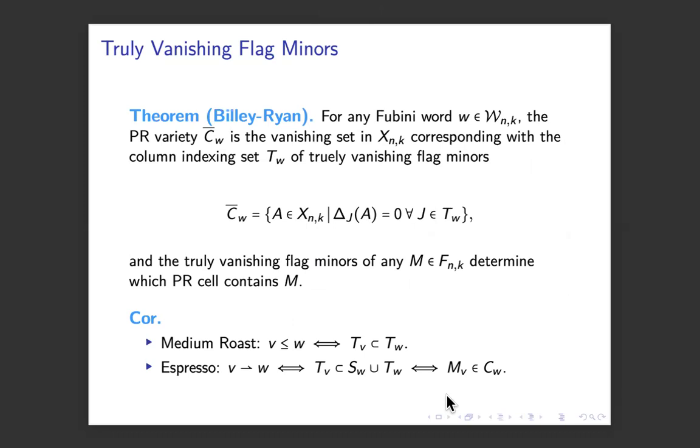We have a smaller set of equations that we have proven also defines the closure of these PR cells. And they're in terms of the flag minors, not just all minors, but the flag minors of the Bruhat order only use the top subset of rows. Maybe you use the first two rows and then any subset of columns.